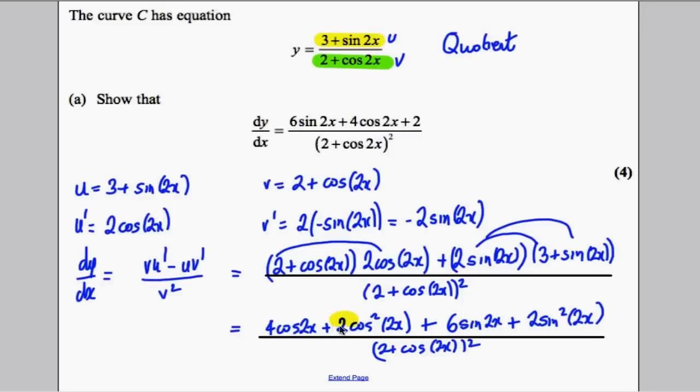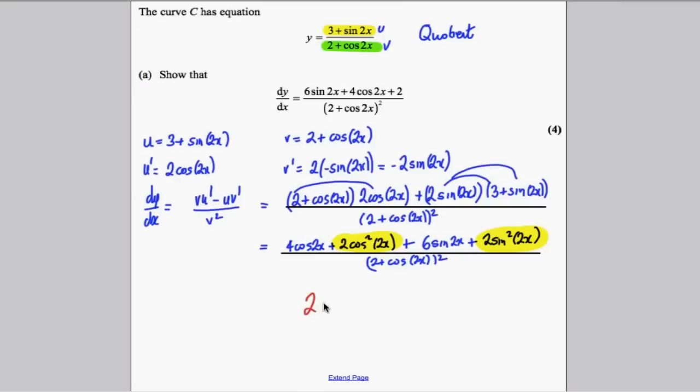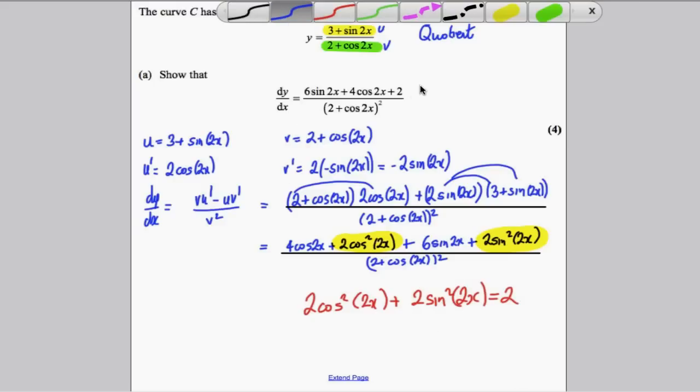Now, notice at this stage, 2 cos squared 2x plus 2 sine squared 2x would be equal to 2. So you should state that, you should state that 2 cos squared 2x plus 2 sine squared 2x must be equal to 2. OK, so don't just write down the rule here, don't write down what you're looking for, write down that as part of your method marks.